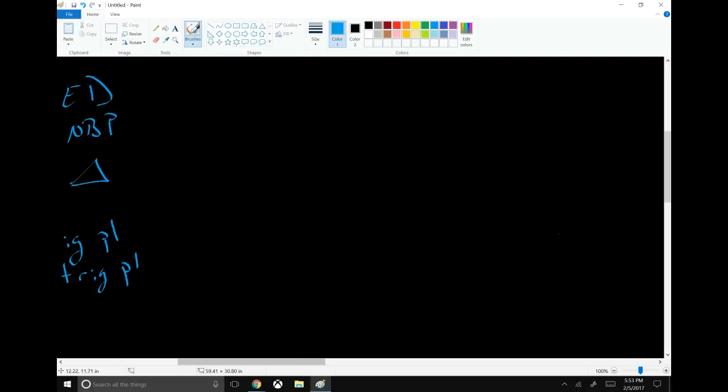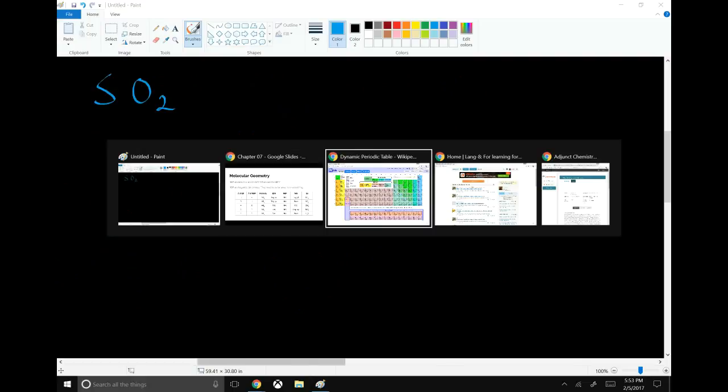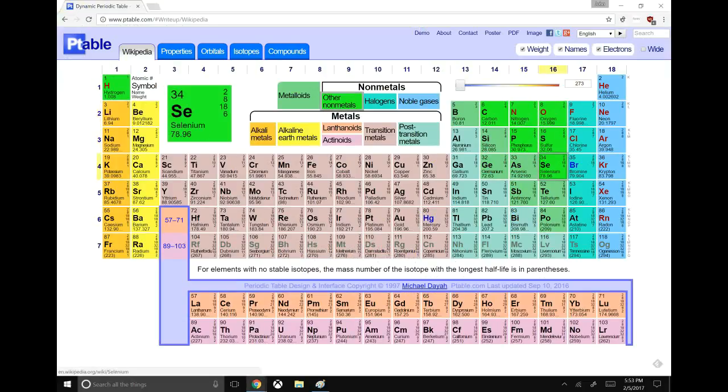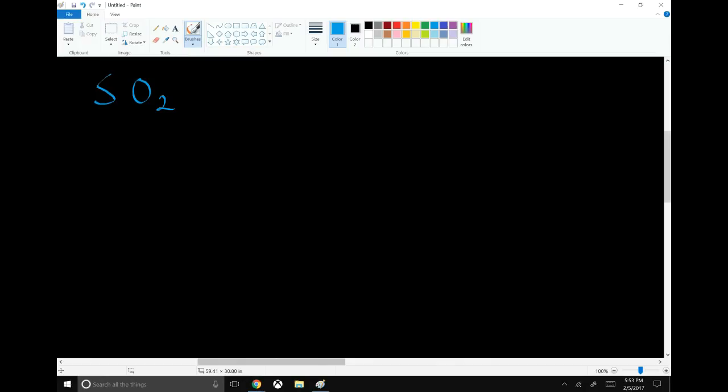So our next example is sulfur dioxide, SO2. So sulfur gives us six valence electrons and so does oxygen right above it. So six plus 12, there are two oxygens, is 18 electrons.